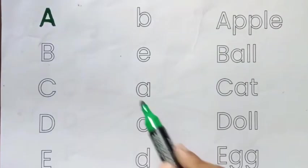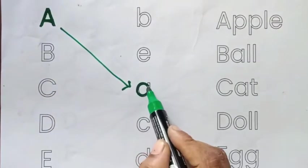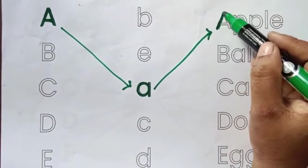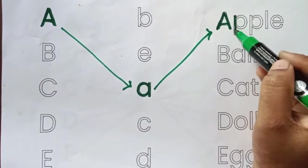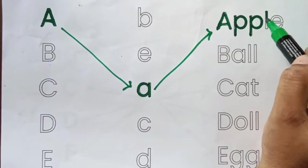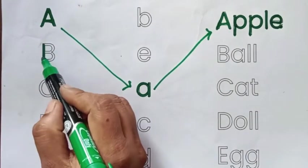Capital letter A, Small letter A, A for Apple. A, Double P, L, E. Apple, A for Apple.